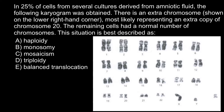If we look at this karyogram, we would see that one chromosome is present as an extra copy, most likely of chromosome number 20 — it resembles this chromosome. So some cells have this extra chromosome, and some don't.